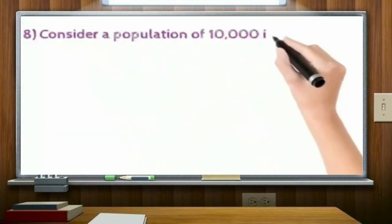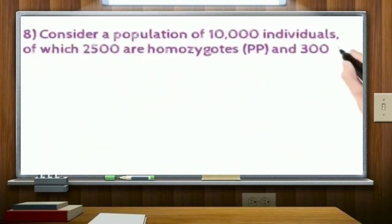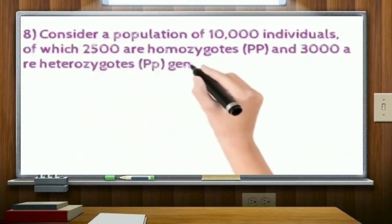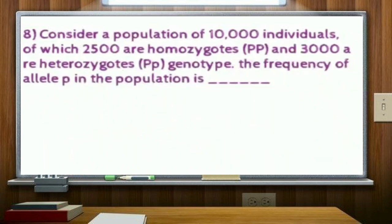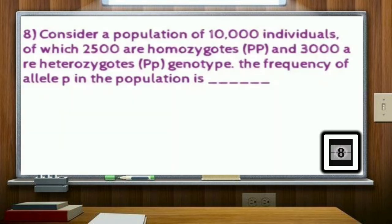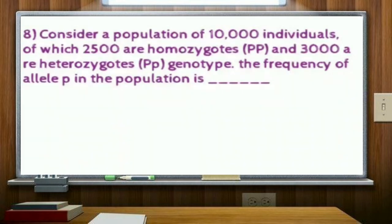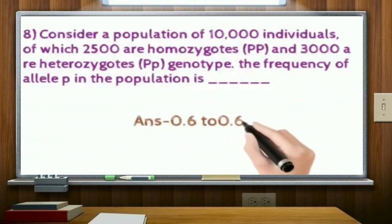Consider a population of 10,000 individuals of which 2,500 are homozygotes and 3,000 are heterozygotes genotype. The frequency of allele P in the population is? Correct answer: 0.4 to 0.6.